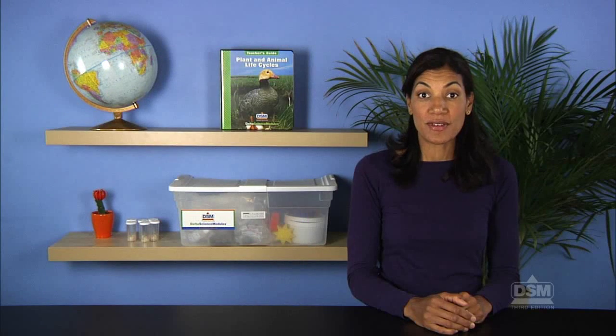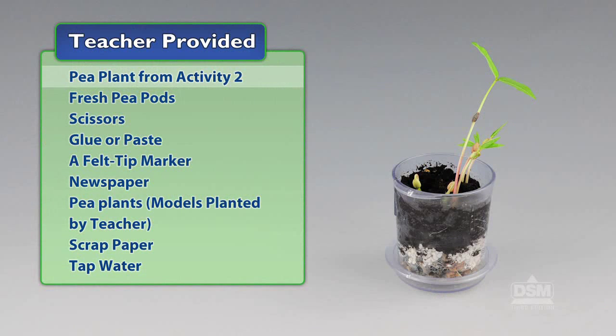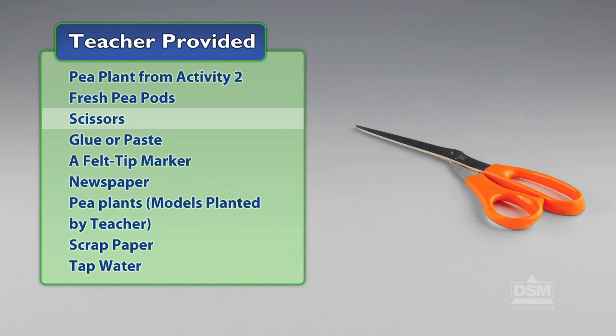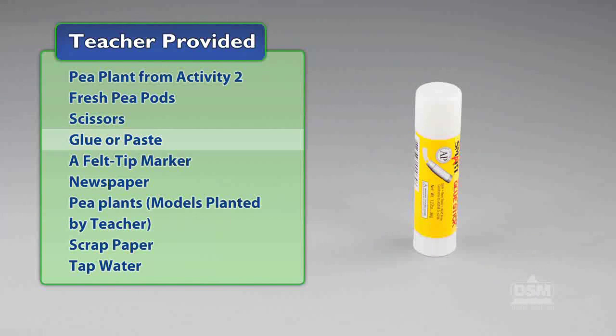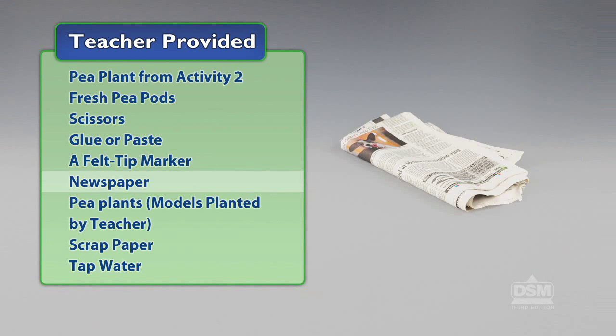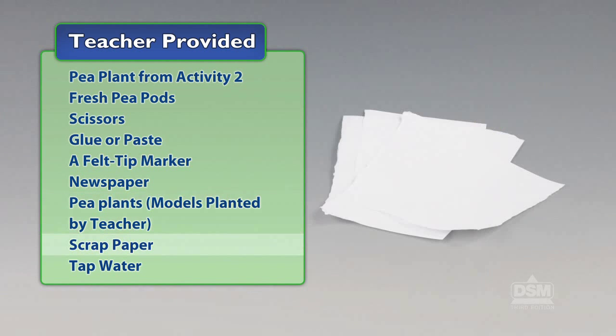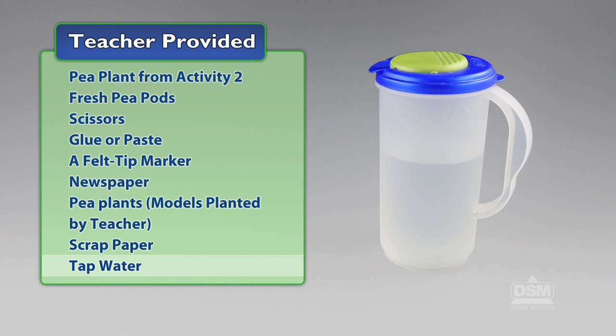You will also need to provide pea plants from Activity 2, fresh pea pods, scissors, glue or paste, a felt tip marker, newspaper, pea plants, scrap paper, and tap water.